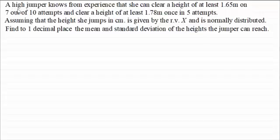But what we've got here is a high jumper knows from experience that she can clear a height of at least 1.65 meters on 7 out of 10 attempts and clear a height of at least 1.78 meters once in 5 attempts. So assuming that the height she jumps in centimeters is given by the random variable x and is normally distributed, find to one decimal place the mean and the standard deviation of the heights the jumper can reach.